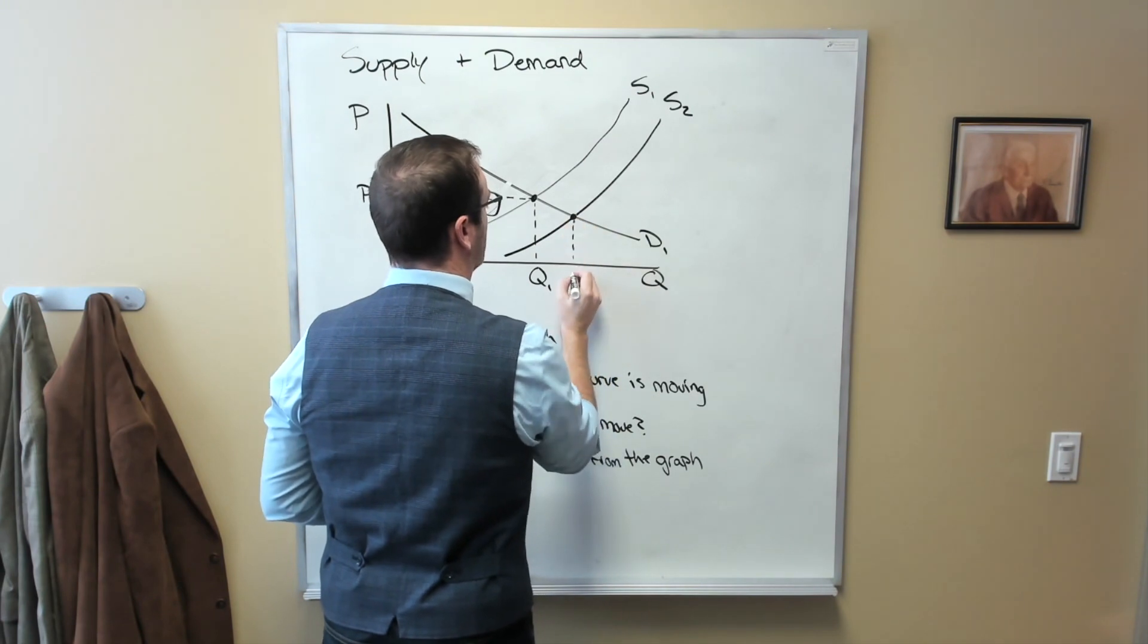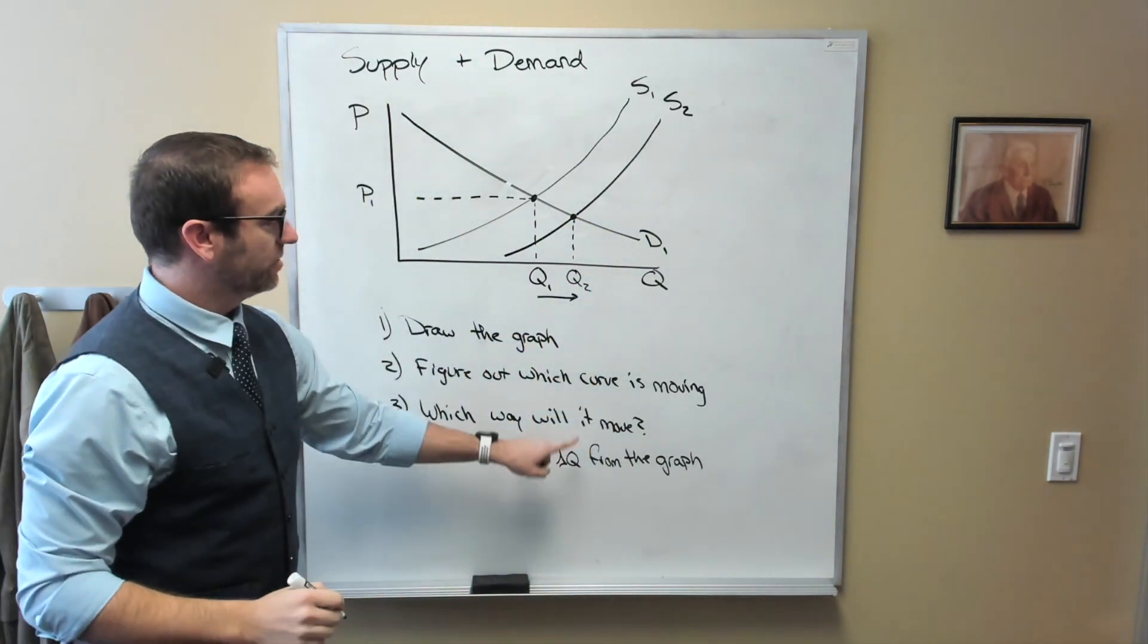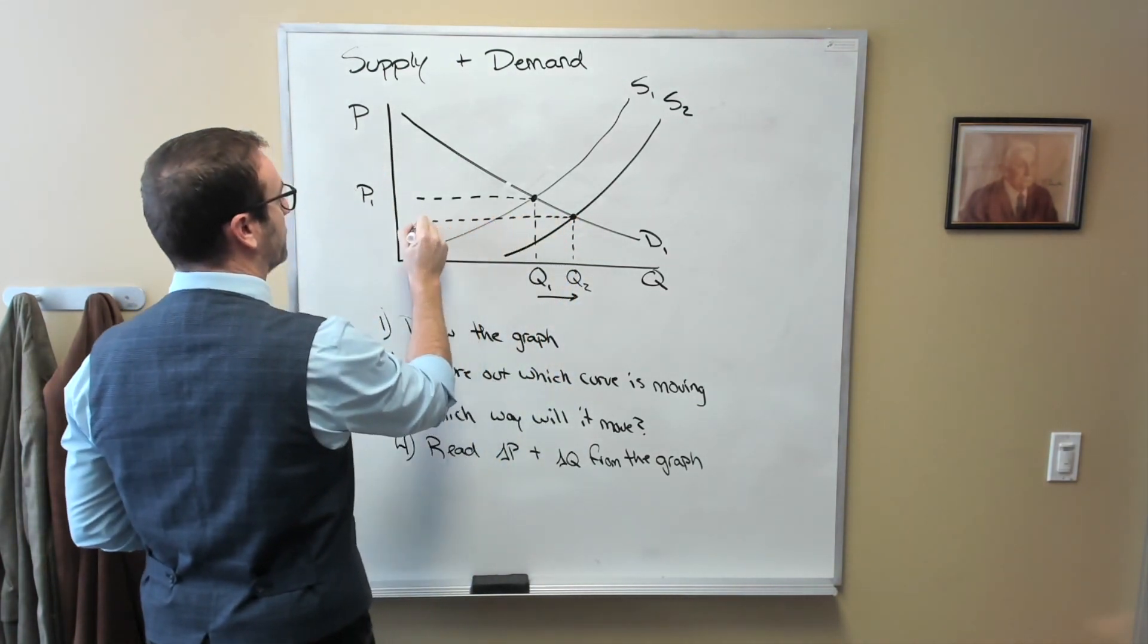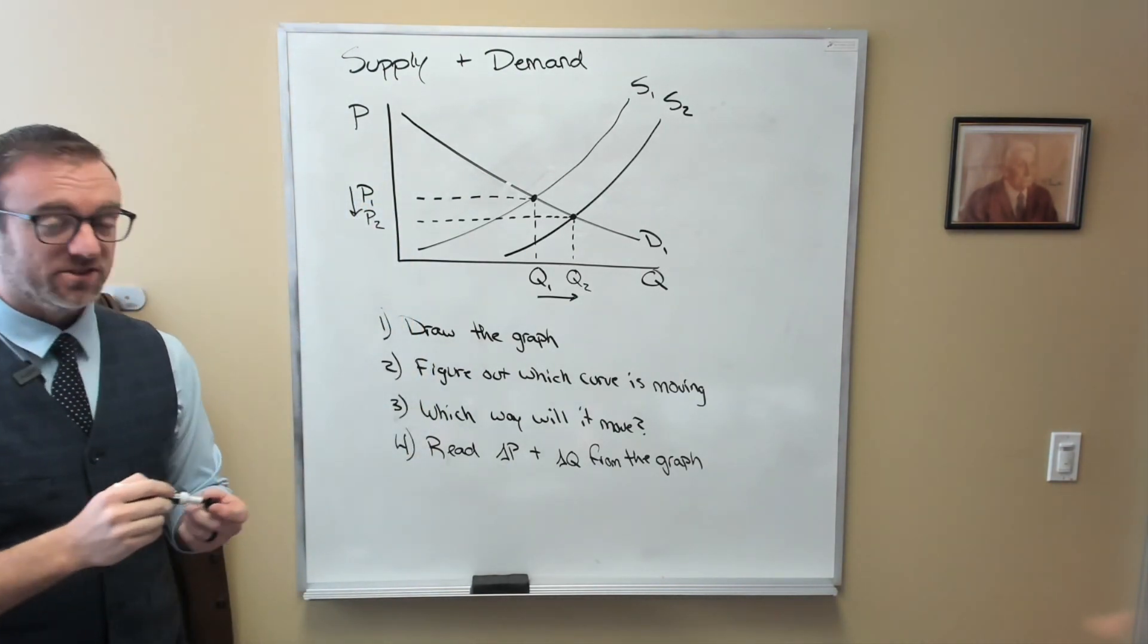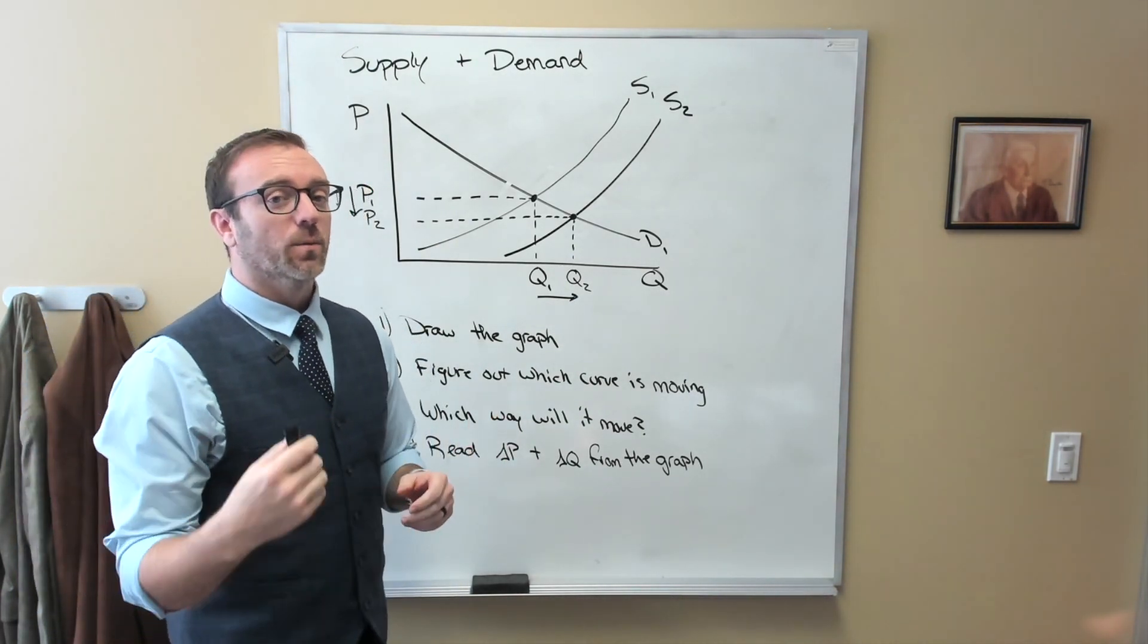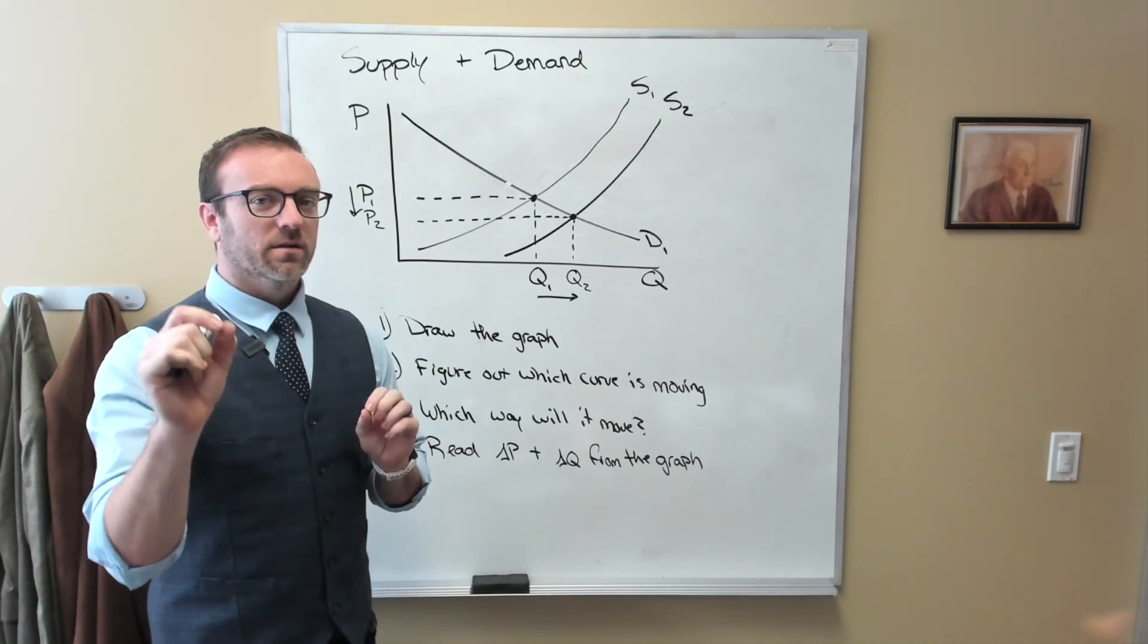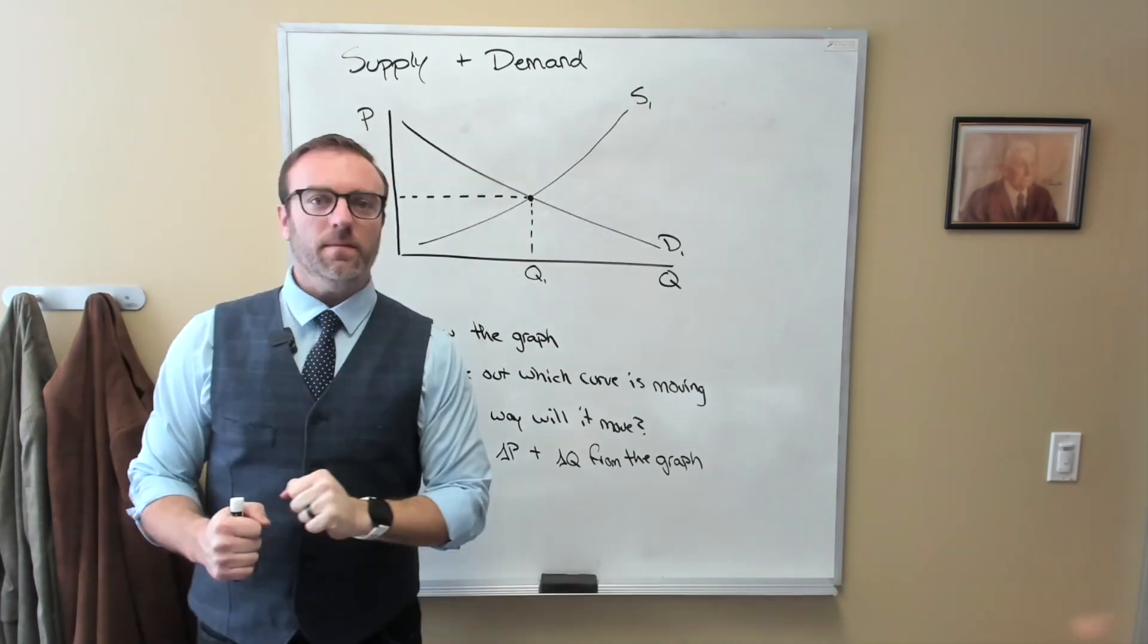And what we can see is then step four, we can see that the change in quantity, we're going to see an increase in the amount of healthcare available, and we're going to see a decrease in the price. So this four-step plan really does help you boil down what you should be doing and how you should be thinking about things. Let's do another example that's perhaps a little bit more complicated.